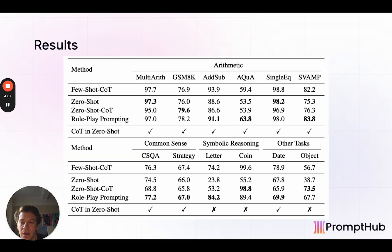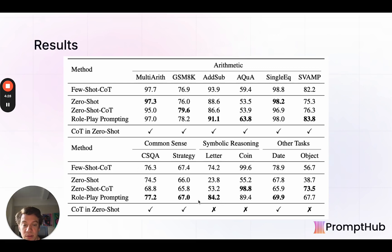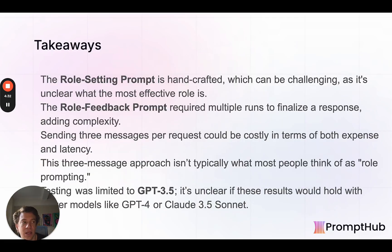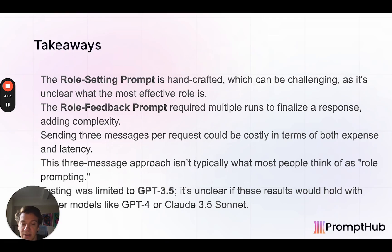This is GPT-3.5, and on average it outperformed by about 10%. You could see cases where zero-shot prompting was actually the best, and cases where it clearly blows it out of the water for something like symbolic reasoning. Across the board it did have a positive effect. But there are a few caveats: the role setting prompt was handwritten, which can be challenging and time-consuming; they selected the best role feedback prompts, which could take many runs; and sending three messages for every additional user message can be costly in terms of cost and latency. It was done with GPT-3.5, so it's hard to know if this would hold for newer models.